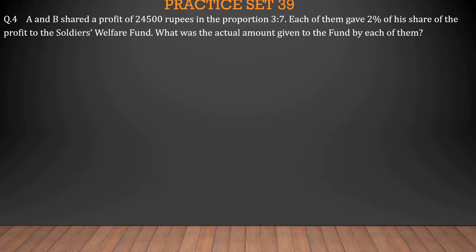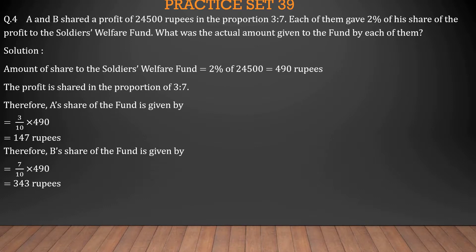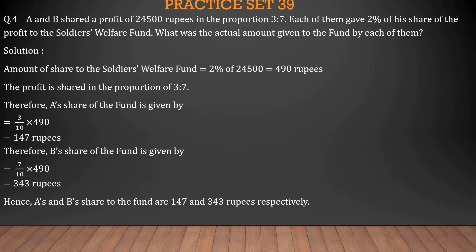Fourth sum: A and B shared a profit of 24,500 rupees in the proportion 3:7. Each of them gave 2% of his share to the soldiers welfare fund. Amount given to fund = 2% of 24,500 = 490 rupees. A's share of the fund = 3/10 × 490 = 147 rupees. B's share of the fund = 7/10 × 490 = 343 rupees. Hence, A's share of the fund is 147 rupees and B's is 343 rupees.